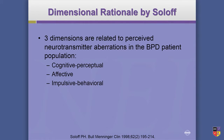Cognitive perceptual includes paranoia, transient psychosis, derealization, dissociation, maybe even inability to focus, concentrate, pay attention. If you see that, that's cognitive perceptual. Affective would be dysphoric mood, negative states — depression, anxiety. And then impulsive behavior: hitting somebody, cutting, acting out, throwing things — that would be more of that category.